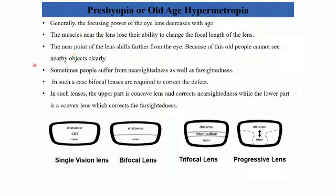We have often seen our grandparents reading a book or newspaper by holding it slightly away from them, or threading a needle by keeping it at a distance. This is because their near point has shifted from 25 to about 200 centimeters. The correction for presbyopia is the same as for hypermetropia — they use convex lenses.